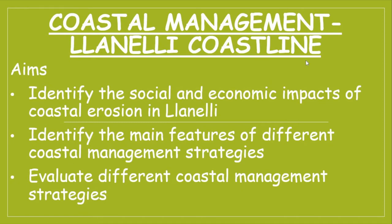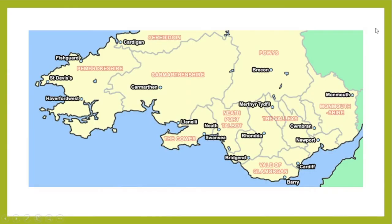First off, where exactly are we looking at? Here is a map of the South Wales coastline. Llanelli is around here, there's Swansea city centre, and here's our Gower Peninsula. The area we're going to be focusing on is right here — that's where the actual town of Llanelli is built right on the coastline. The first thing I want to draw your attention to is the shape of the coastline in this area — it sort of comes in to a point and out again. This is the Loughor Estuary where the River Loughor goes out into what becomes the Bristol Channel.